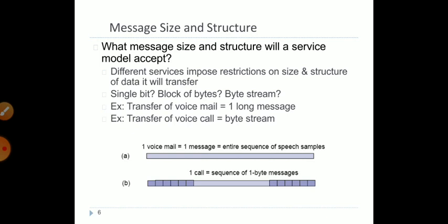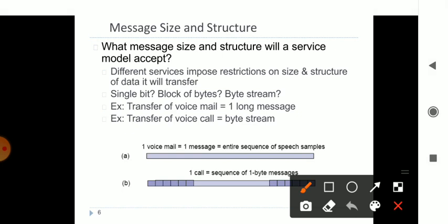First is message size and structure. When information is being passed from one end to another, that message will have its own size when it is being transferred. There are also some restrictions on the size when it is sent over the line. For example, in Gmail you have a set size limit for sending messages. Whatever data — video or otherwise — you can send has certain restrictions implemented on the network. The most important factor is the size of your data.